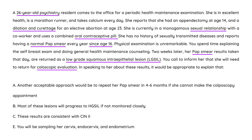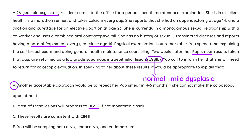LGSIL represents mild dysplasia, and the good news is that most paps showing LGSIL will spontaneously become normal. Only about 10% will progress. So although colposcopy is a good idea, more frequent pap smears — for example every six months — is also an acceptable approach. The answer to this question is that it is incorrect to say most of these lesions will progress to HGSIL, since only 10% will. These results are also not consistent with cervical intraepithelial neoplasia 2.